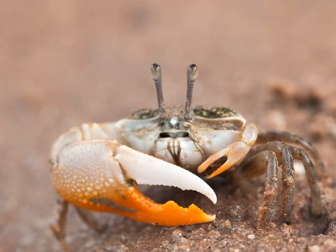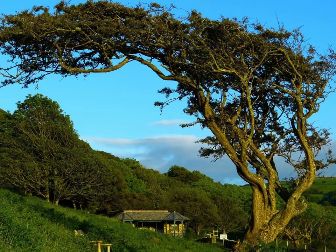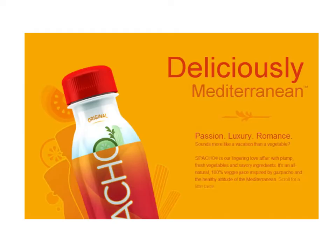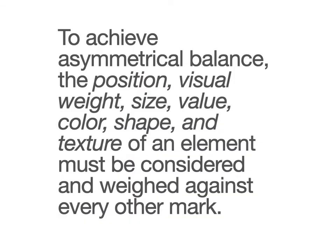We see a lot of asymmetry in life as well. To achieve asymmetrical balance — which I would contest is harder than symmetrical — the position, visual weight, size, value, color, shape, and texture of an element must be considered and weighed against every other mark. This is the first time you'll hear this: everything relates to everything else. Every element relates to every other element on the page, and together they form one balanced, cohesive whole and one clear, hopefully engaging message.